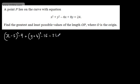We set that equal to the 24. We can now add the 9 and the 16 to both sides. So we'll have the quantity x minus 3 all squared plus the quantity y plus 4 all squared is equal to 49.